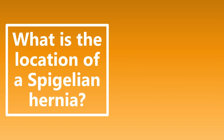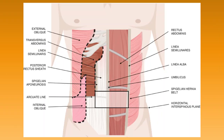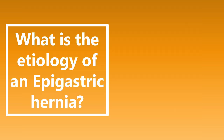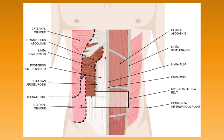What is the location of a spigelian hernia? The location is lateral to the lateral border of the rectus muscle. On the visual, you can see the rectus muscle with the spigelian hernias occurring at the lateral aspect of that lateral border. What is the etiology of an epigastric hernia? This is due to weakening of the linea alba. Epigastric hernias typically occur in the epigastric region because of weakening of the linea alba tissue.